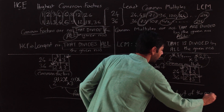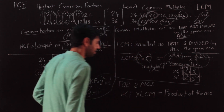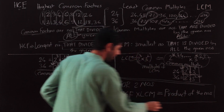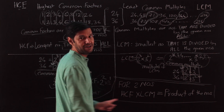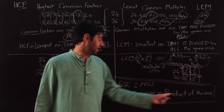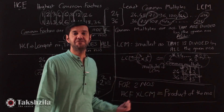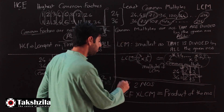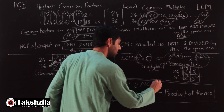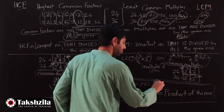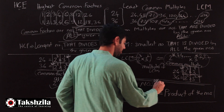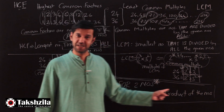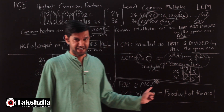So using this understanding, we arrive at an important property: HCF × LCM = product of the two numbers. But remember, this is valid only for two numbers — conditions apply. Do not use it for three or more numbers.